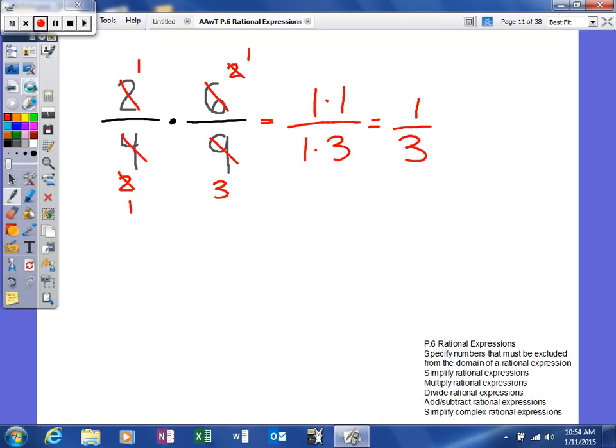Let's look at a more appropriate example for what we're working on. Here it is: (x-7)/(x-1) times (x²-1)/(3x-21). Our job is to simplify this. But before we can simplify it, we need to factor.